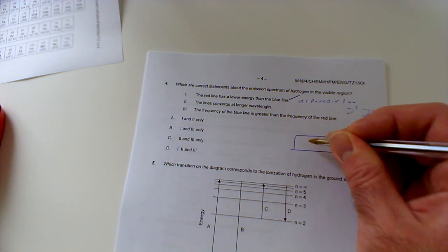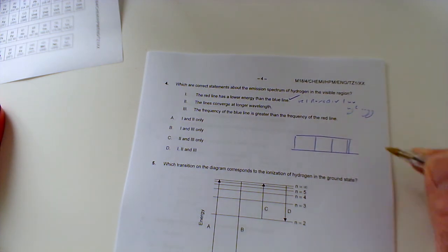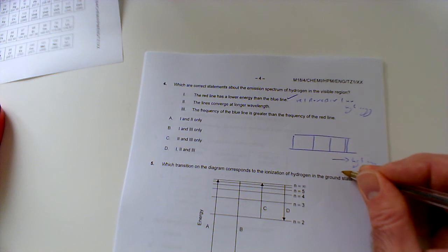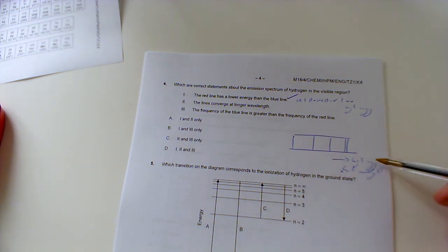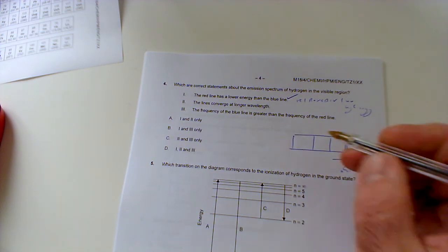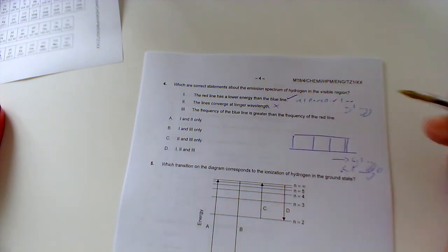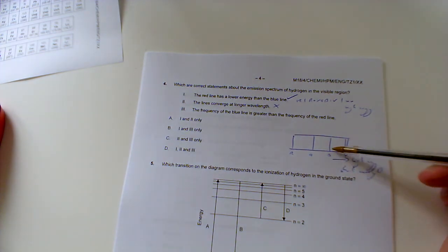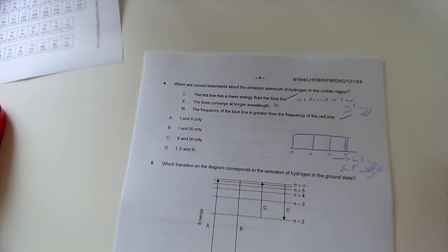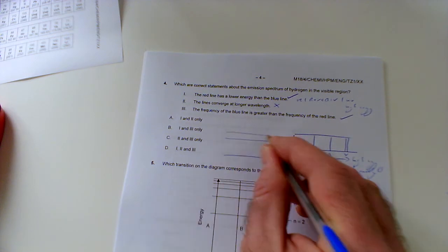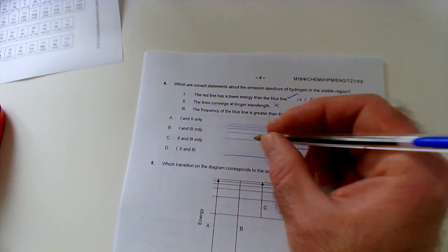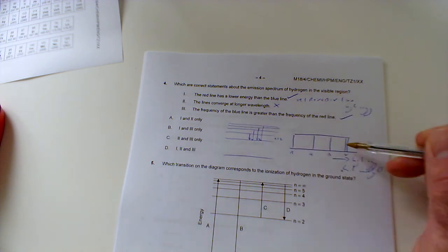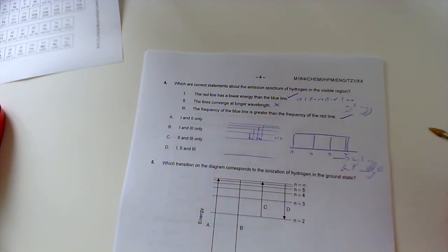The lines converge at longer wavelength. Remember your emission spectrum looks like this, where you've got them well spaced out, but they then start to converge at high energy. So they actually converge at high energy, which would be a short wavelength. Remember, wavelength does the opposite to energy and frequency. High energy is a high frequency but a short wavelength. So this one's incorrect—they would converge at shorter wavelengths because they converge at higher energy. The frequency of the blue line is greater than the frequency of the red line. Well, blue is a higher energy than red, which means it's a higher frequency, so this one is correct as well. Remember, the reason they converge to this high energy is in the Bohr model of the atom, the electron shells get closer together the further you go from the nucleus. So we're looking for one and three only.